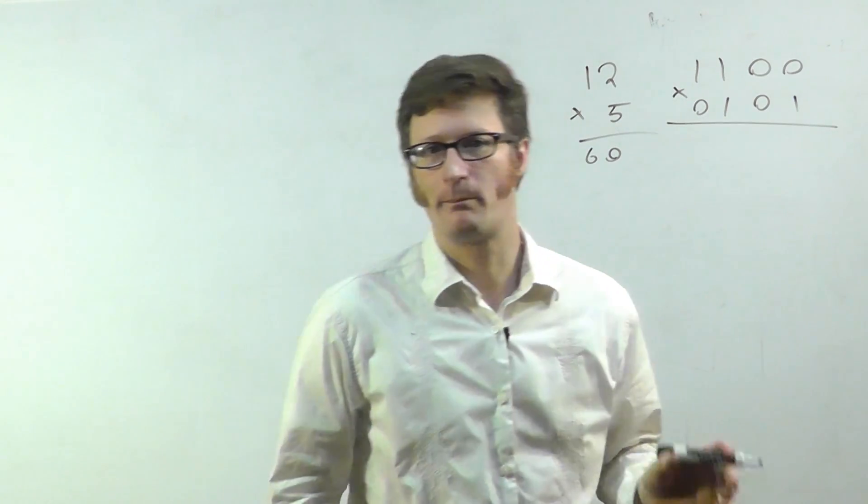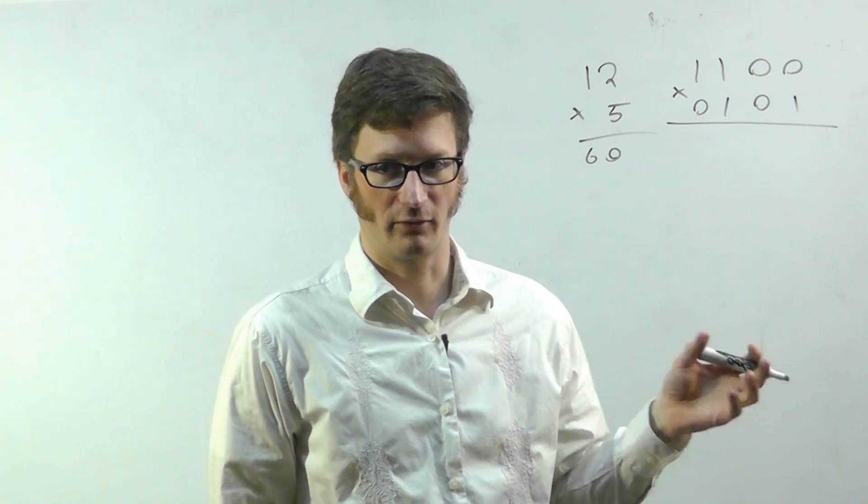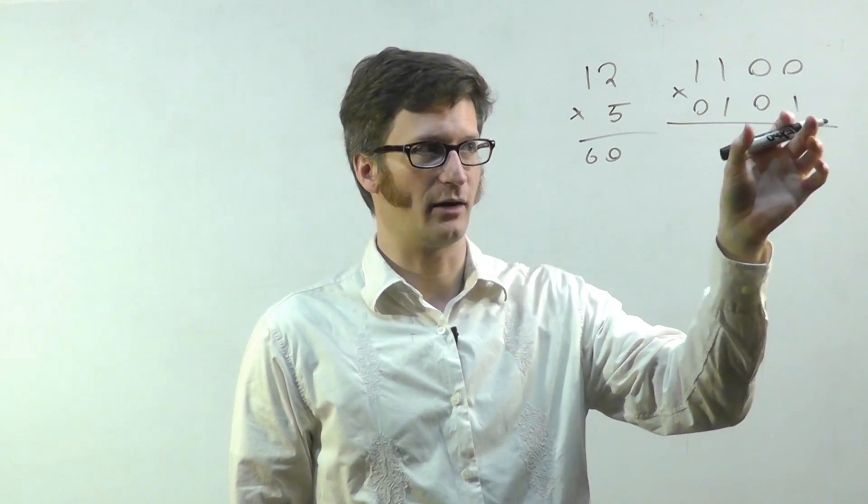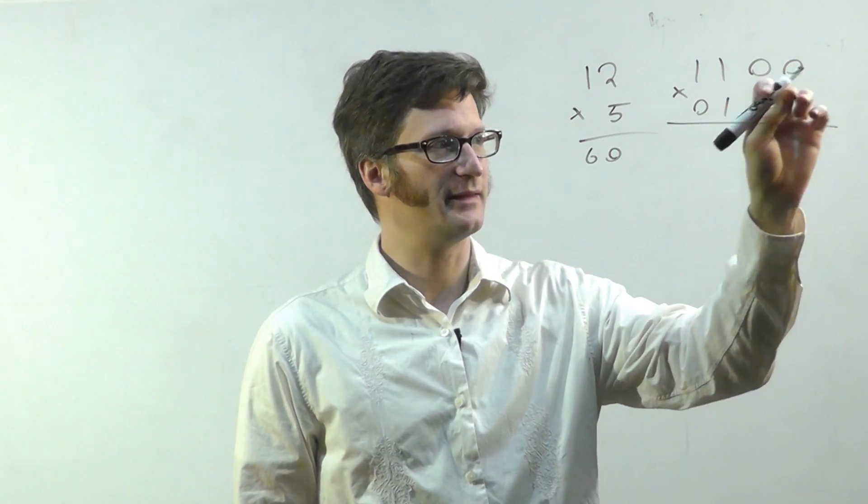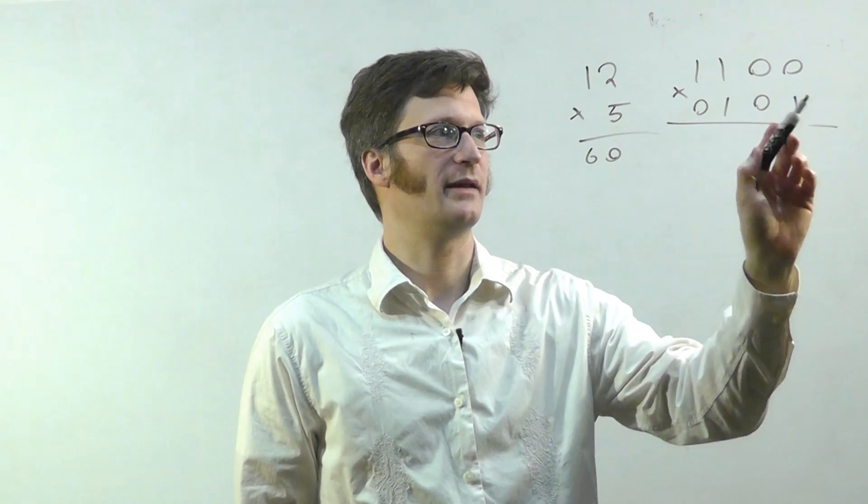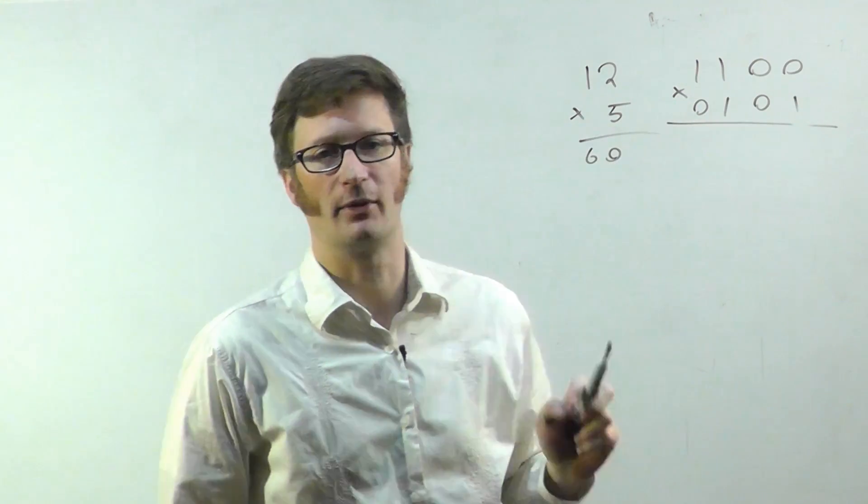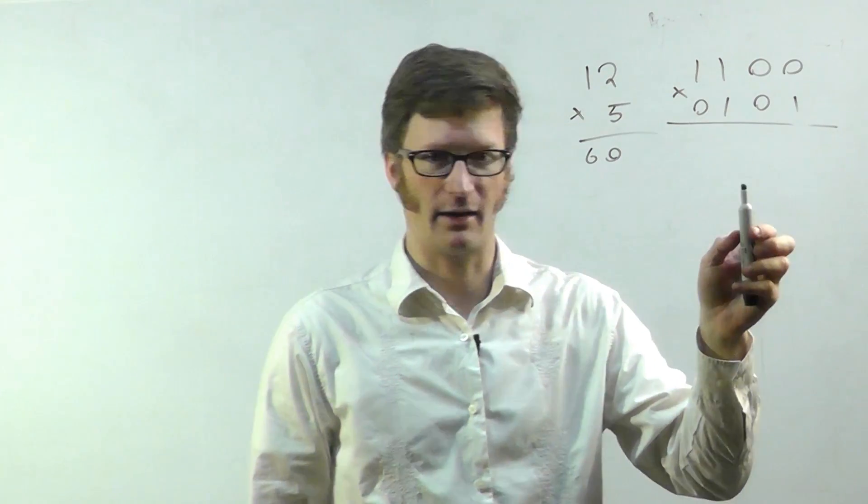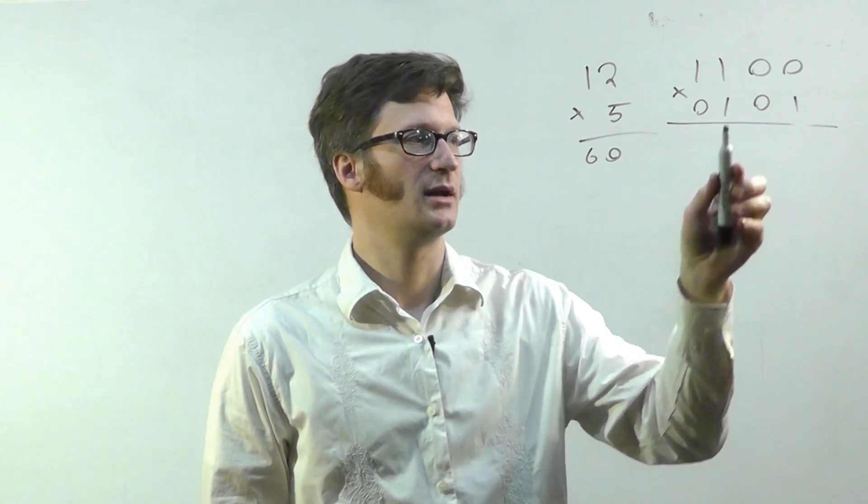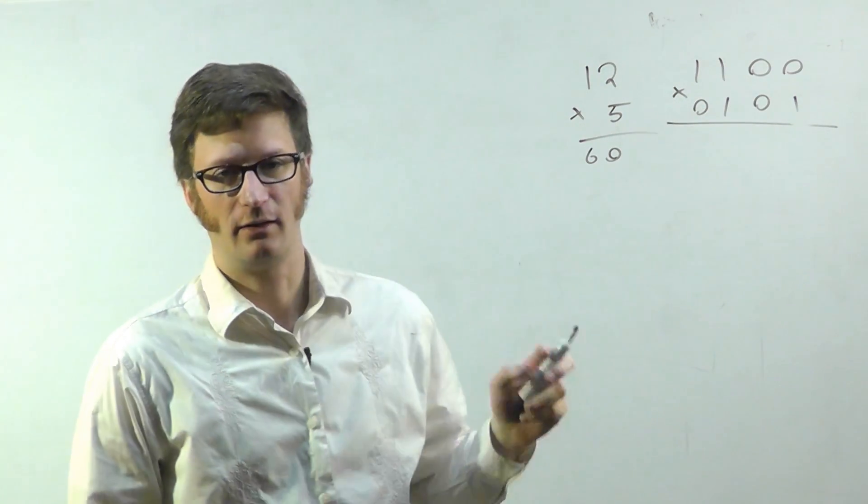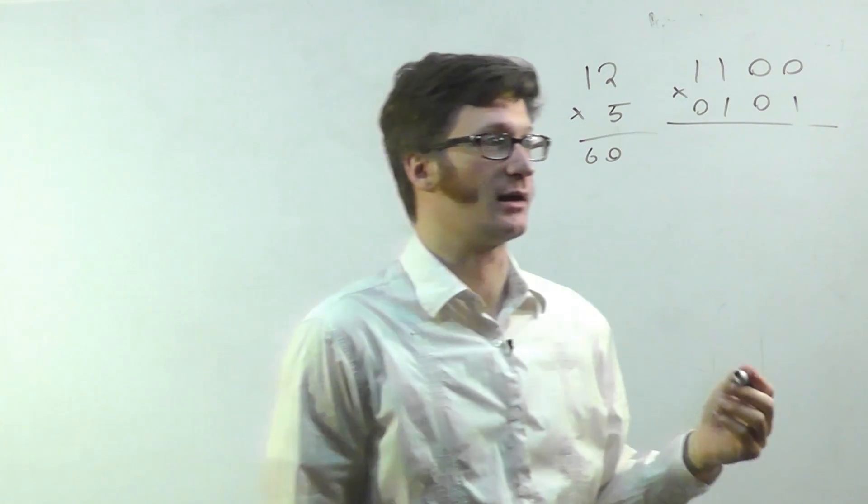So when we're multiplying regular decimal numbers, what we do is we are looking at this digit and then multiplying it by each one of the digits in the top number. And then we come down and we shift over one digit and then we look at this one and multiply it by each of these. It's pretty much the same thing.